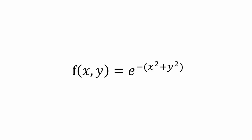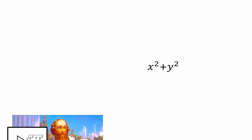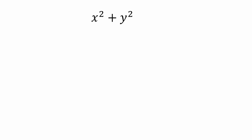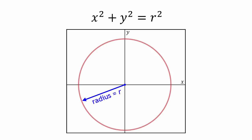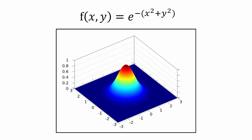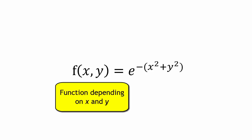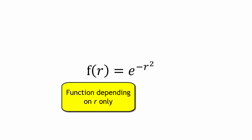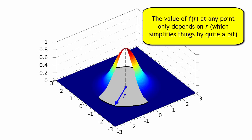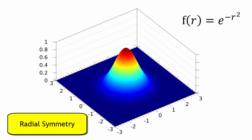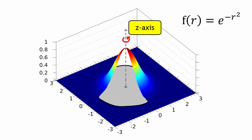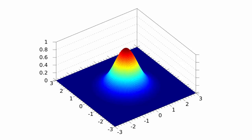Let's look back at the function again: e to the power of minus x squared plus y squared. But what is x squared plus y squared? If you draw the equation x squared plus y squared equals r squared on an xy plane, you get the equation for a circle with radius r — every point on this curve is a distance r away from the origin. So let's replace x squared plus y squared with r squared. Now we have a function that depends on r, which is just the distance that the point is away from the z-axis. In this form, we can see the graph has radial symmetry — you can rotate it about the z-axis and it will still look the same. This property will help us a lot when finding the volume under this graph.